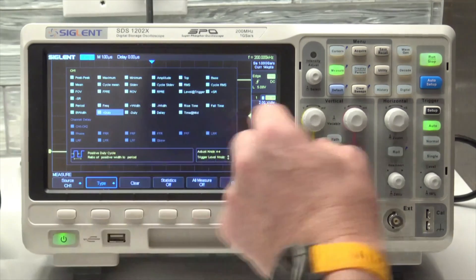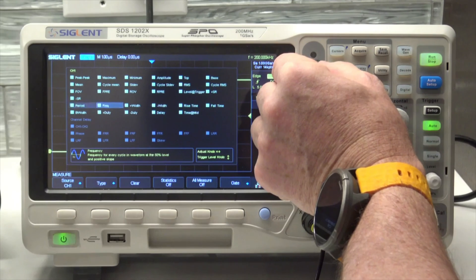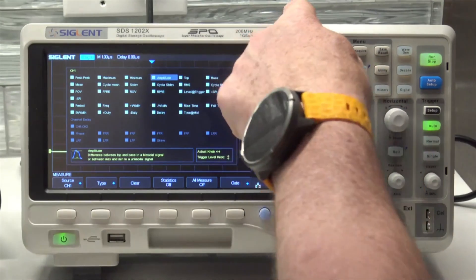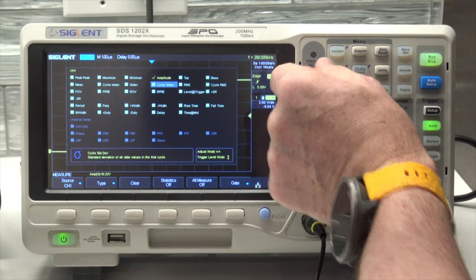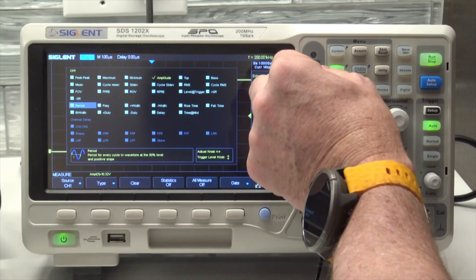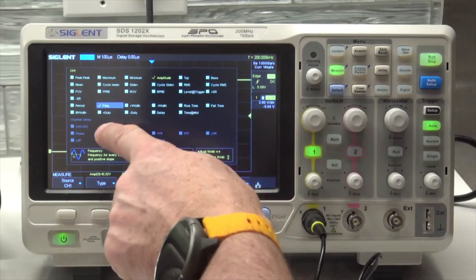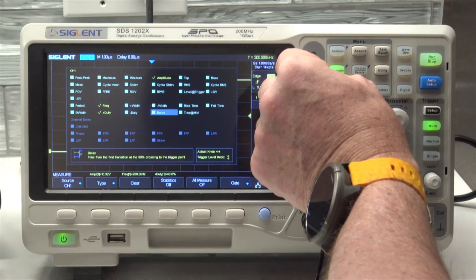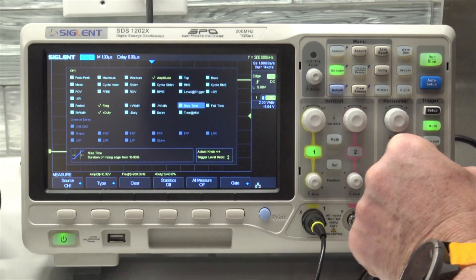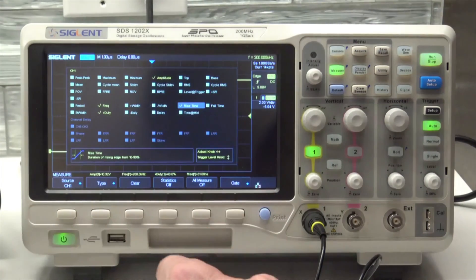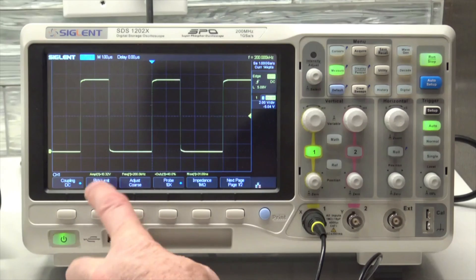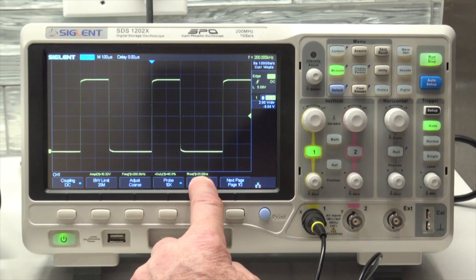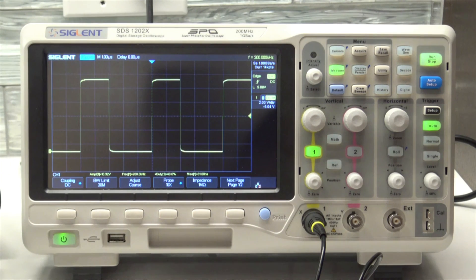I'm going to say type, and I can rotate this guy around. I'm going to say I want to read amplitude, frequency, duty cycle, and rise time too. So I've got 10.32 volts, 200 kilohertz, duty cycle is 40 percent, rise time is 31 nanoseconds. It all looks pretty good.